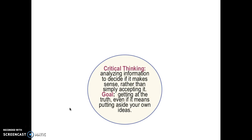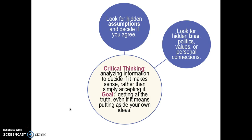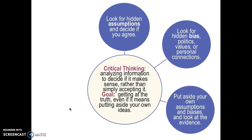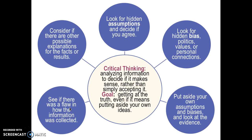Now, critical thinking. Its goal is to get to the truth, even if it means putting aside our own ideas and intuition. We have to look for hidden assumptions and decide if we agree with them. We also have to look for hidden biases — politics, values, or personal connections. To get down to the truth, we put aside our own assumptions and bias, look at the evidence, see if there was a flaw in how the information was collected, and ask whether there are other explanations for the facts or results. That is the second part of the need for psychological science.